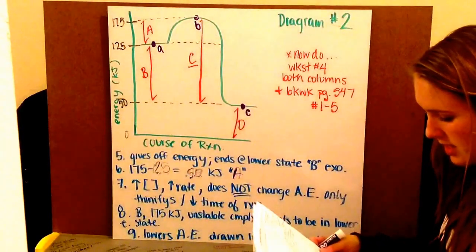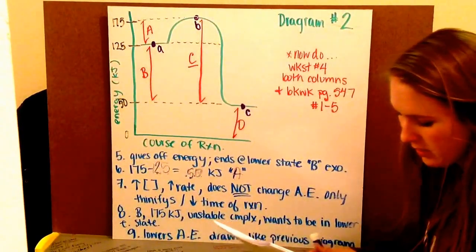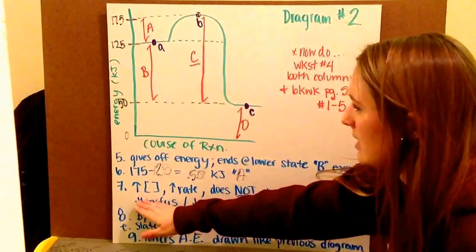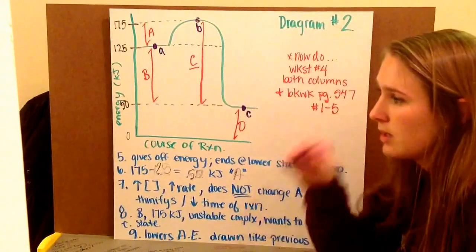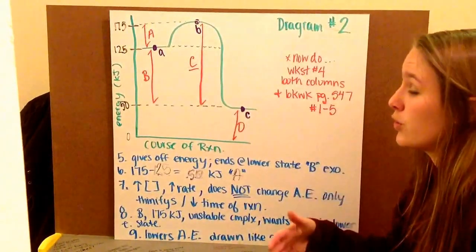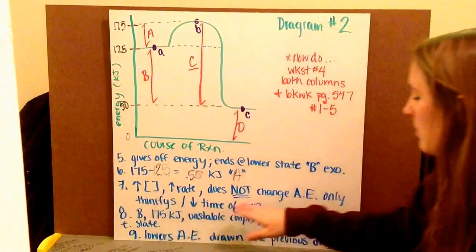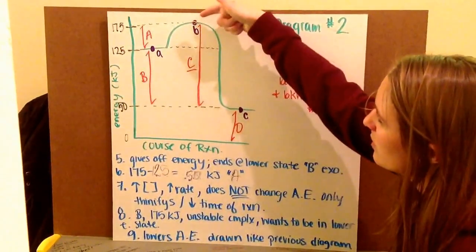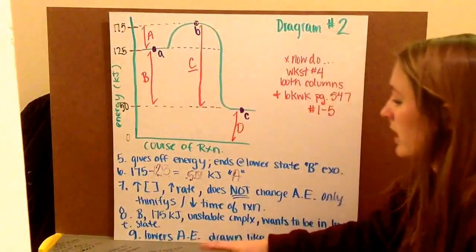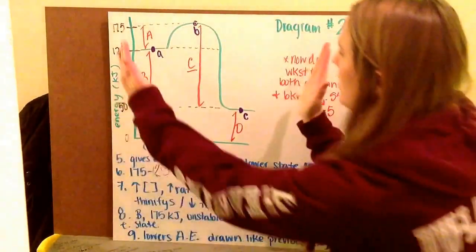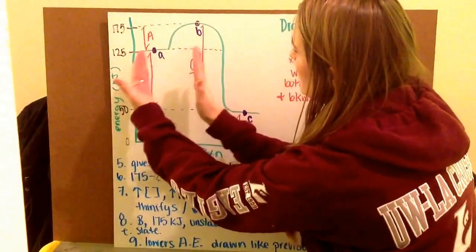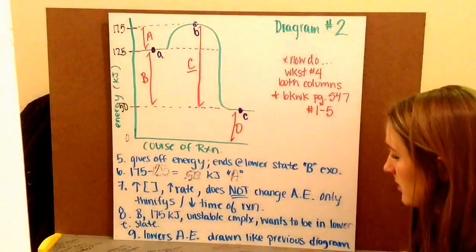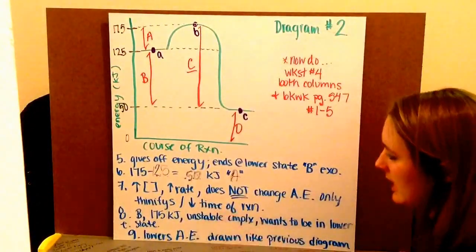Number seven asks, what is the effect on the diagram of increasing the concentration of the reactant? Well, if I increase my concentration of the reactant, there's going to be more collisions. Therefore, the reaction is going to progress faster. So it increases my rate, but it doesn't change my activation energy. So it doesn't change how much energy is required to force that reaction to go forward. Therefore, it just kind of thinifies, so it kind of just decreases my amount of time, squishes it together this way. But it doesn't change how high my activation energy is. It only decreases the time of my reaction.